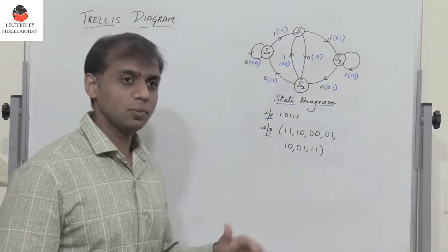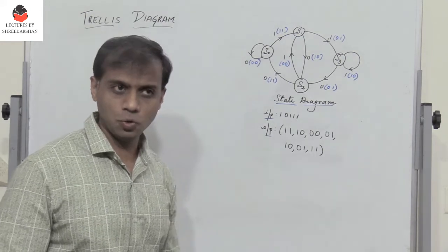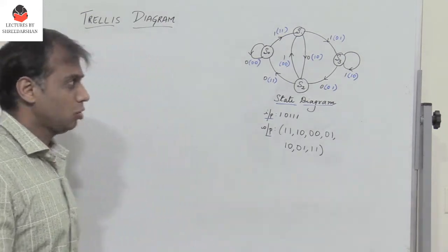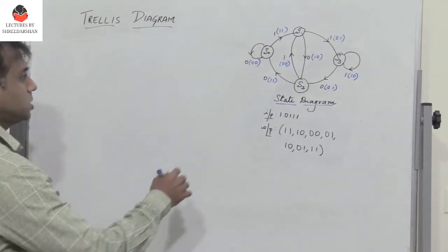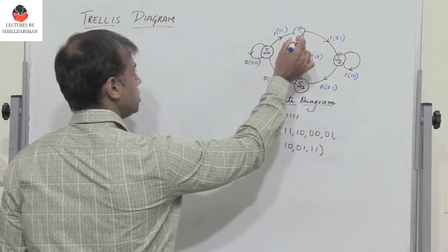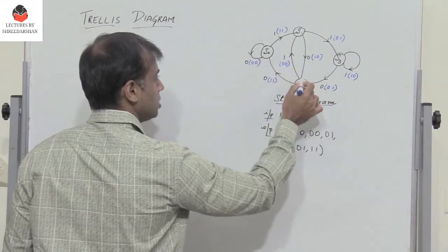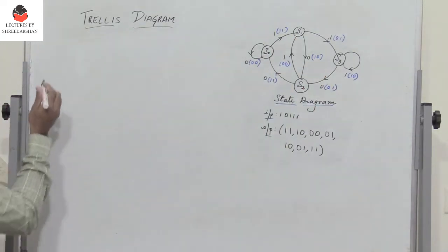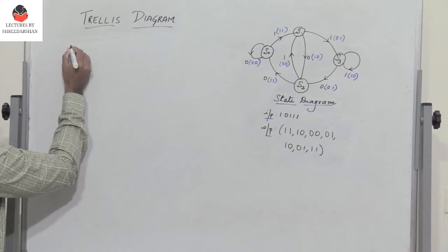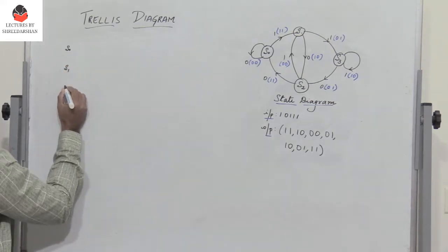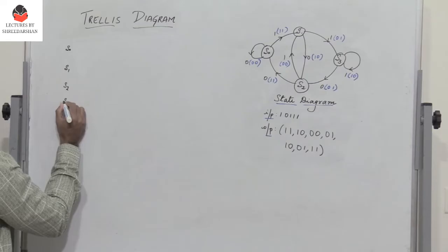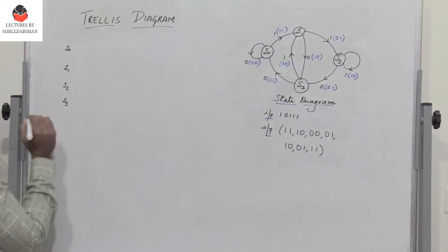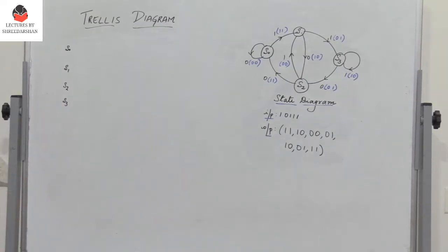To draw the trellis diagram, we have to follow a few general steps. We observe that there are four states: s0, s1, s2, and s3. So I indicate four states — s0, s1, s2, and s3. These are the four states here.